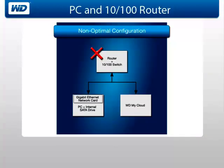Now that we have reviewed optimal configurations, we will take a look at four common configurations which are not ideal for transferring large files. For a personal computer connected to a network drive, do not use a router with a 10/100 switch.